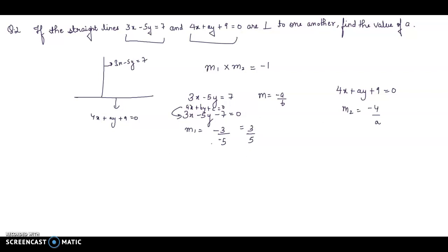I will put M₁ × M₂ = -1, that will be 3/5 multiply -4/a = -1. On solving this, we will get a = 12/5.